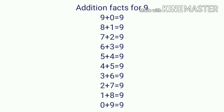I will read the addition facts once again: 9 plus 0, 8 plus 1, 7 plus 2, 6 plus 3, 5 plus 4, 4 plus 5, 3 plus 6, 2 plus 7, 1 plus 8, and 0 plus 9. These are the addition facts for the number 9. If you remember these, you can add faster. I hope you have understood how to find out the addition facts for 9.